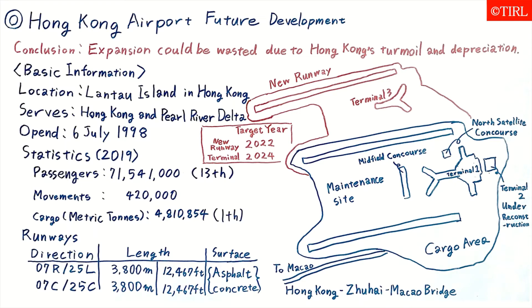This airport was designed as a replacement for the former Hong Kong International Airport, commonly known as Kai Tak Airport, built in 1925.